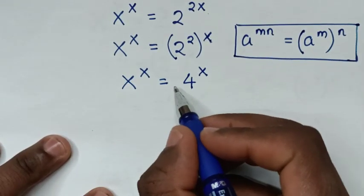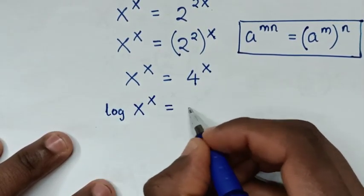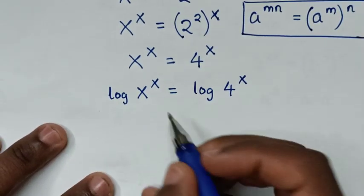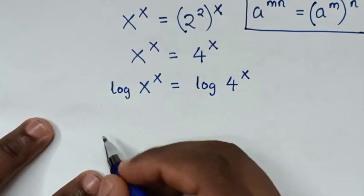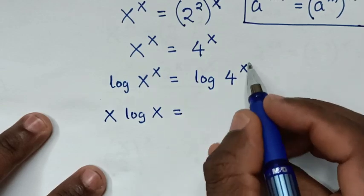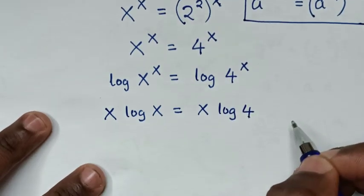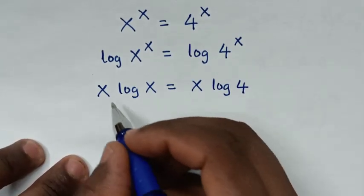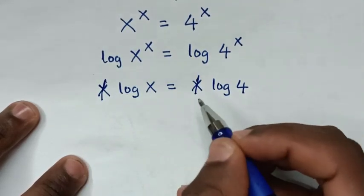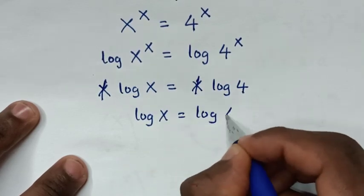We will apply log on both sides. So it will be log of x power of x is equal to log of 4 power of x. Then this power of x will move to the front, so it will be x log of x is equal to x log of 4. Because x is on both sides, this x and this x will cancel. Then it will be log of x is equal to log of 4.